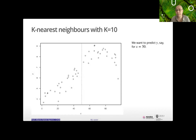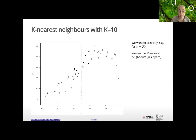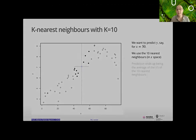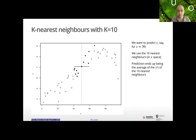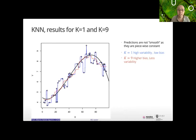For example, with K=10 and wanting to predict the Y value at X=50 where no value exists: look at the 10 nearest neighbors in terms of X (not Y). Maybe four are on one side, six on the other. Take their Y values and average them — that average is your prediction. In general, KNN is easy to understand and implement.